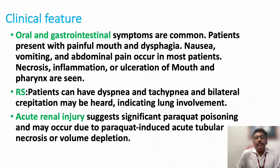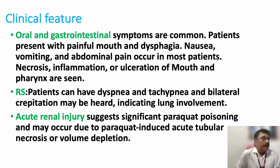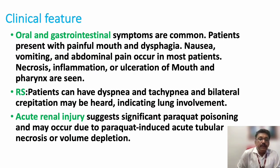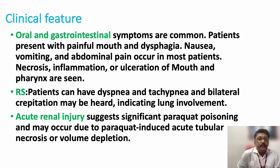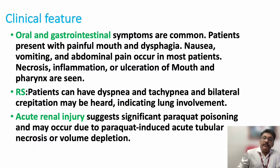Respiratory: most patients are tachypneic and bilateral crepitations are heard because of ARDS-like features. Lung parenchymal involvement, ARDS, or fibrosis of the lung is very common in paraquat poisoning. Acute renal injury can be due to two reasons: severe vomiting and GI symptoms producing severe dehydration causing pre-renal failure, or acute tubular necrosis. If the patient already has a kidney disorder, removal of paraquat will be delayed, aggravating the problem.